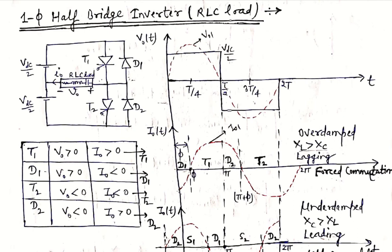Phi is calculated as phi = tan⁻¹((XL − Xc) / R). This is the inductive case. In control systems terms, when DC excitation is applied to an RLC load, this is an overdamped case. The damping ratio zeta should be greater than 1, which shows the overdamping condition when XL is greater than Xc.